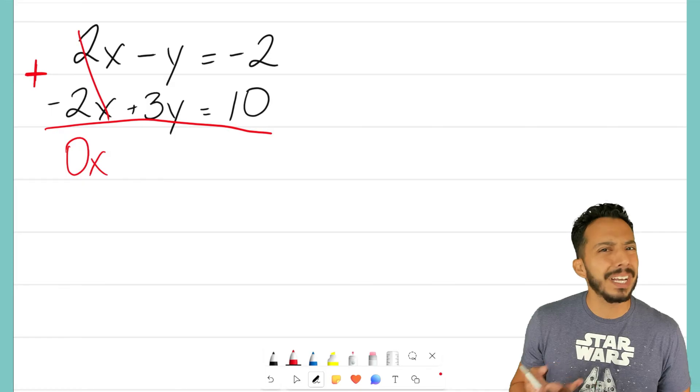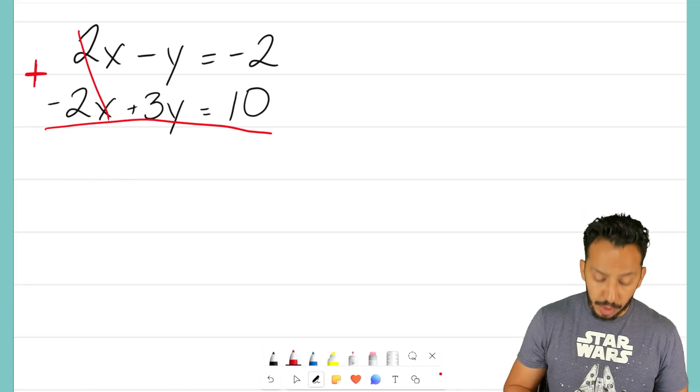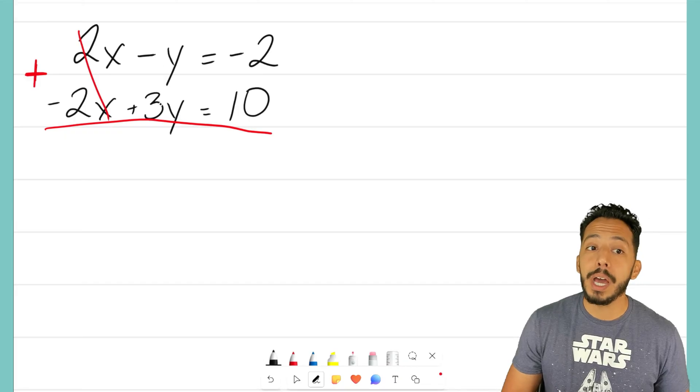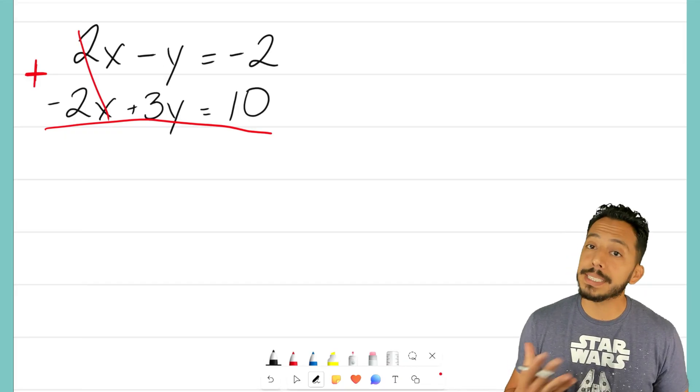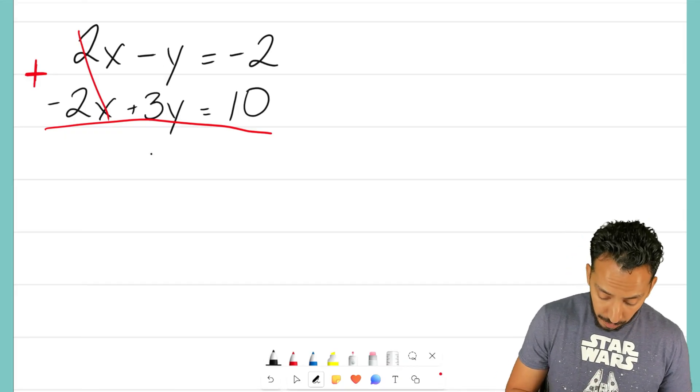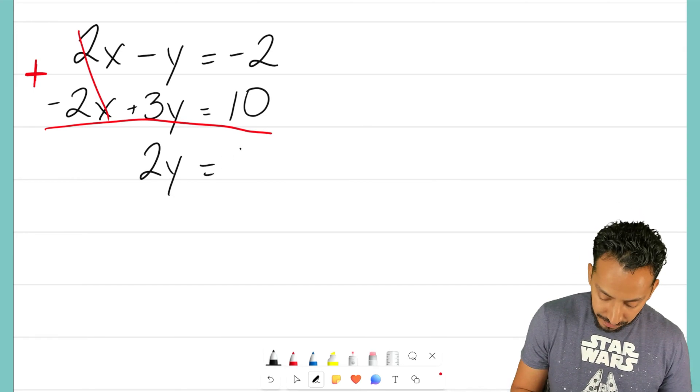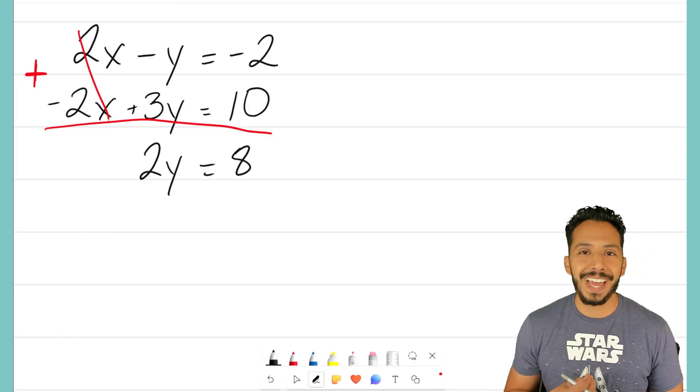Technically, we could write 0x, but we don't really need to, because those zero out. We're then left with negative y plus 3y. Well, that's negative 1 plus 3, so that would give us two y's, and now we have negative 2 plus 10. That will give us a value of positive 8.